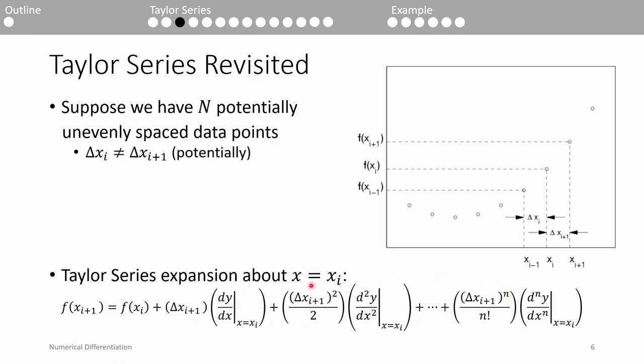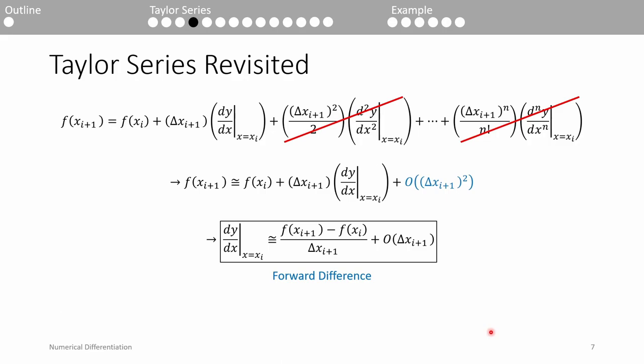If we take the Taylor series expansion about x equals xi, we get the following formula. We estimate f as the y-value at the current point plus the spacing times the derivative evaluated at xi, plus the spacing squared over 2 times the second derivative evaluated at x equals xi, and we can keep going forever since the Taylor series expansion is an infinite series. Obviously, we can't implement an infinite series in MATLAB, so we have to truncate it somewhere.